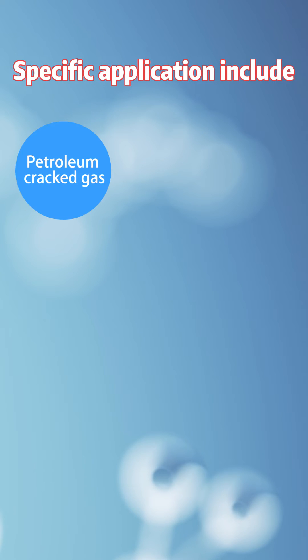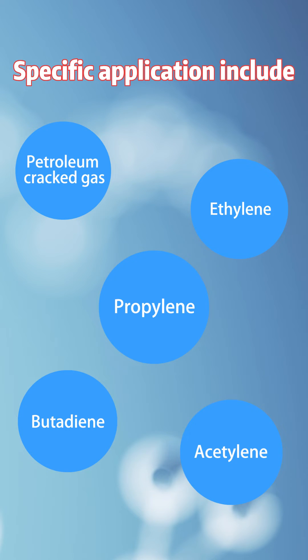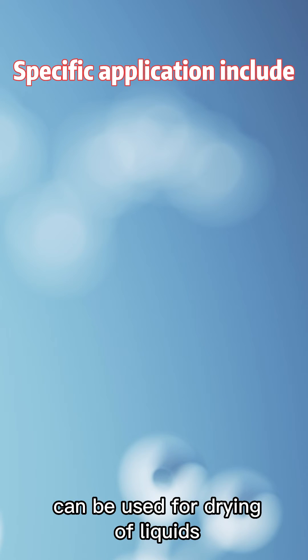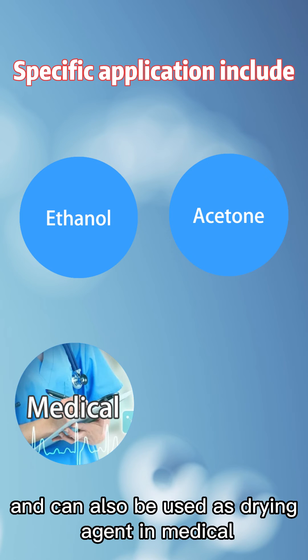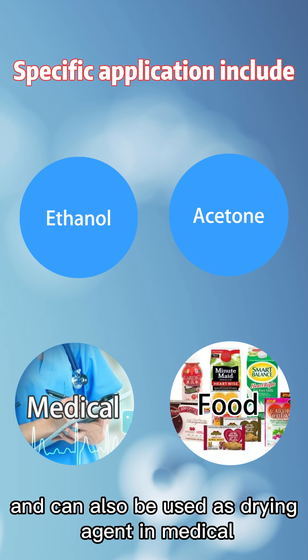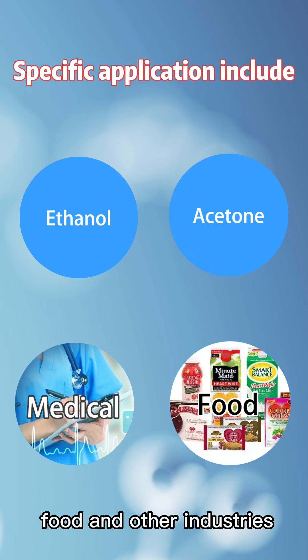Specific applications include deep drying of petroleum cracked gas, ethylene, propylene, butane, acetylene and other gases. It can also be used for drying of liquids such as ethanol and acetone, and can be used as a drying agent in medical, food and other industries.